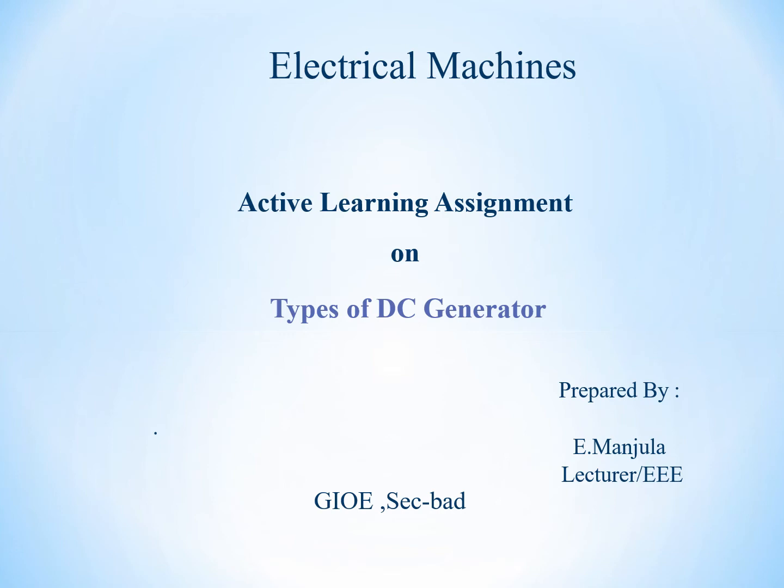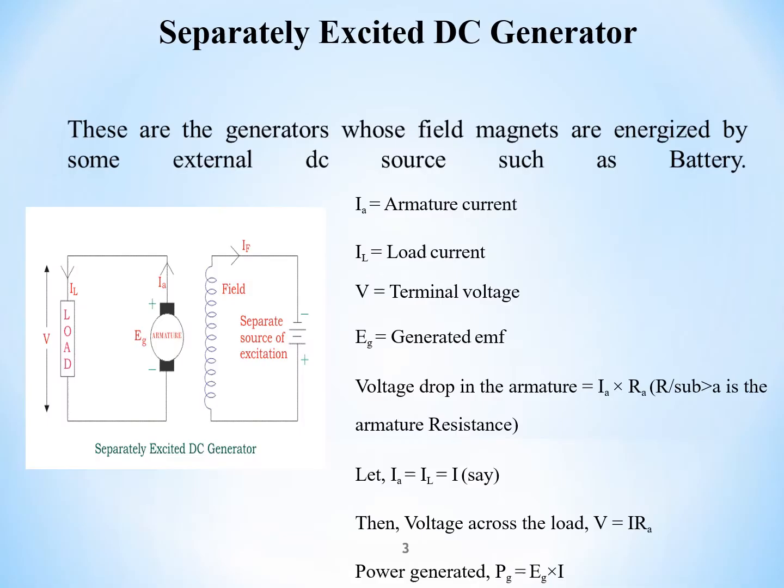Hi all, in the last video we have seen the types of the DC generator. Now I would like to tell how the EMF will be developed in a self-excited DC generator.